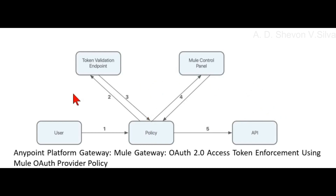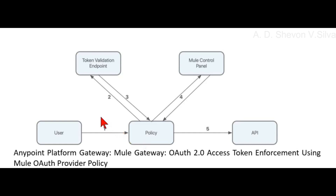As shown in this diagram, in step one, the user first sends an HTTP request to the API protected by the policy. In step two, the policy extracts the token from the request and sends it to the validation endpoint to verify the integrity of the token. In step three, the token validation endpoint returns the token metadata, including the client ID of the client application, using the local database.